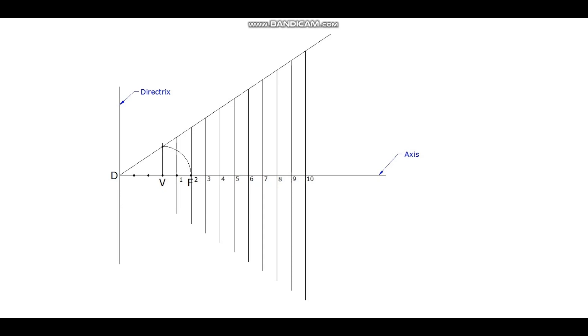To find the other vertex, a 45 degree line is drawn from focus F. This line is extended to meet the inclined line at the top and the meeting point is projected to the axis vertically. This point is V2, vertex number 2.